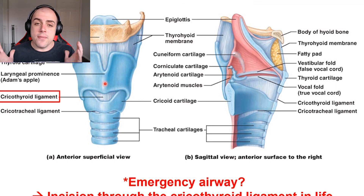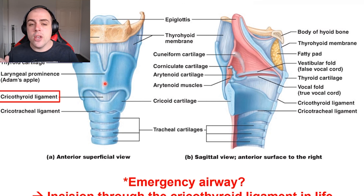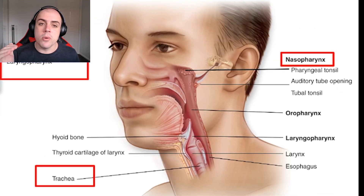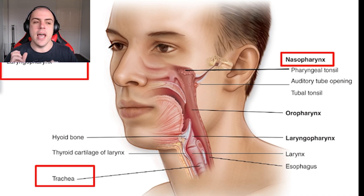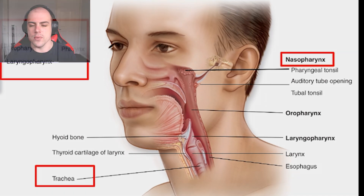So that covers the pharynx and the larynx. In the next video, we're going to be continuing on with our journey and looking at our trachea and bronchioles.